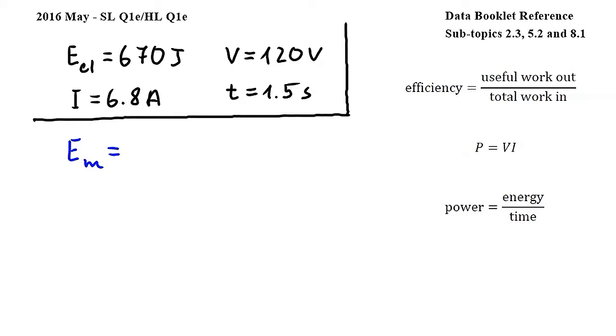To do so, we will combine these two equations from subtopics 5.2 and 8.1. Here P is power, V is potential difference, and I is current.